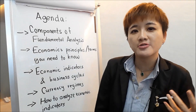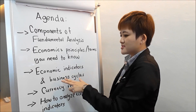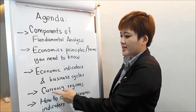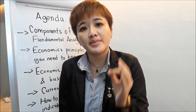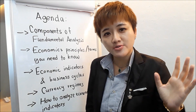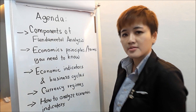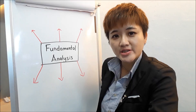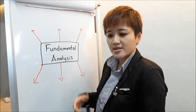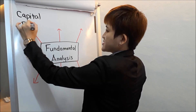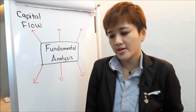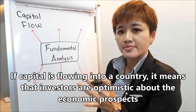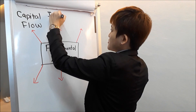Just like in trading and investing there are terms like margin and leverage, in the world of economics there is also lingo you need to know. I'm going to go into economic indicators, how business cycles affect these indicators, and currency regimes — very important because you need to know which currencies to pick based on their regime. If you pick the wrong kind of regime, no matter what you do, you're not going to make money. One component you need to learn is capital flow — is capital flowing into or out of the country? If capital is flowing into a country, it means investors are optimistic about the economic prospects of that country.